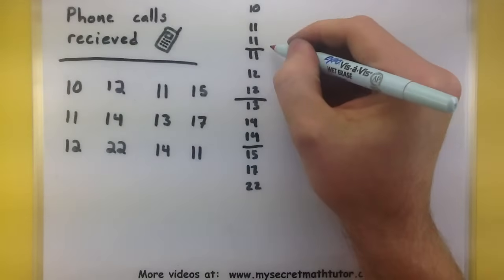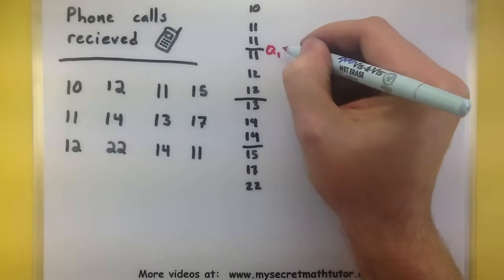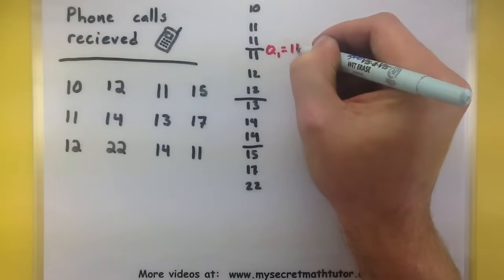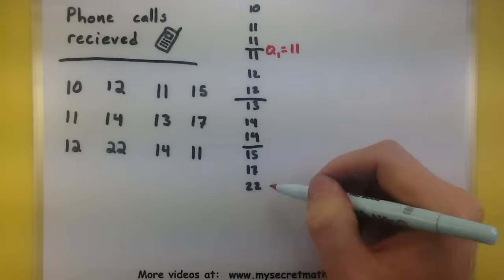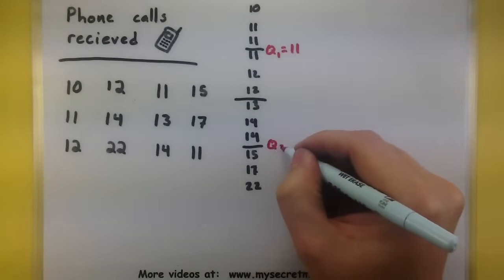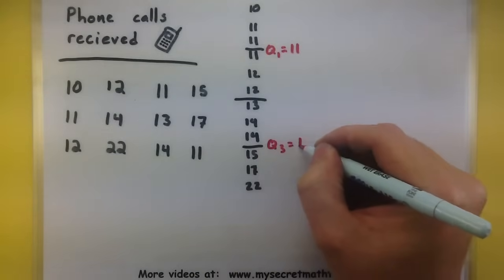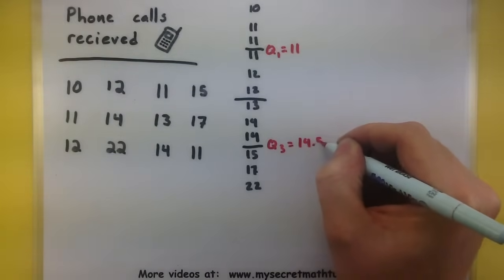Let's see, the halfway point of the first half, let's call this Q1, looks like that is equal to 11. Remember you find that by adding 11 plus 11 and dividing by 2. The mean of the second half, this would be Q3 equals 14.5.